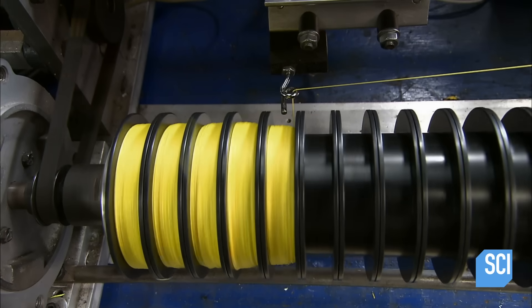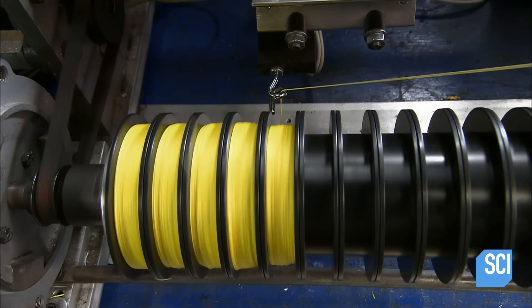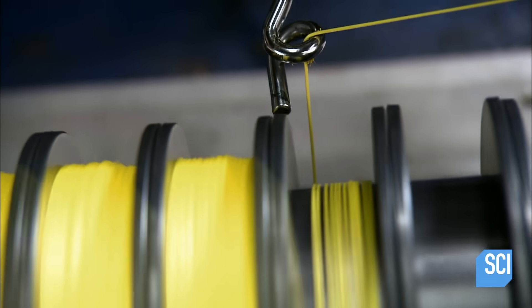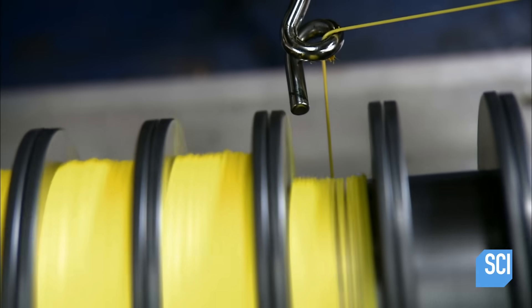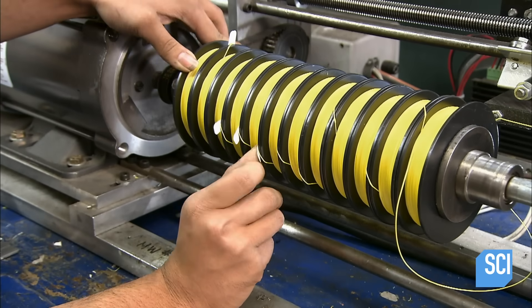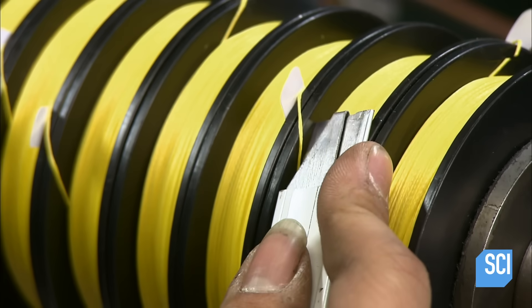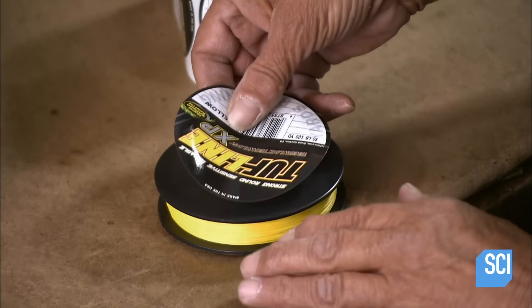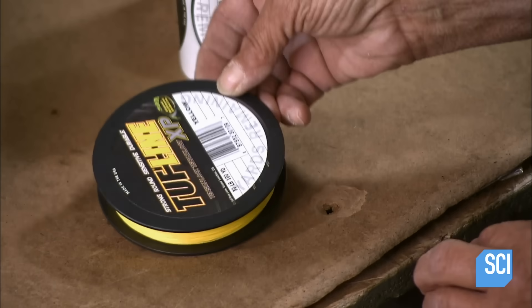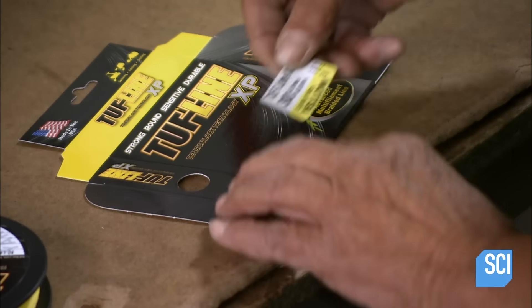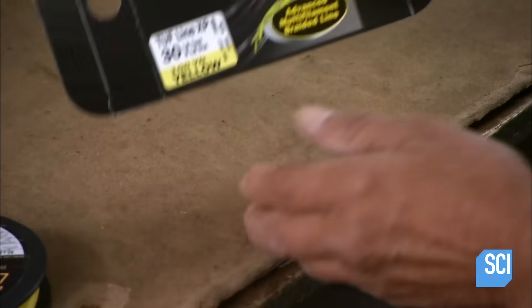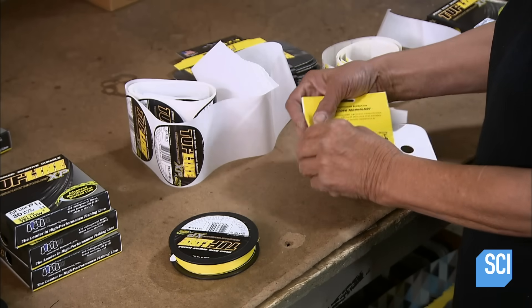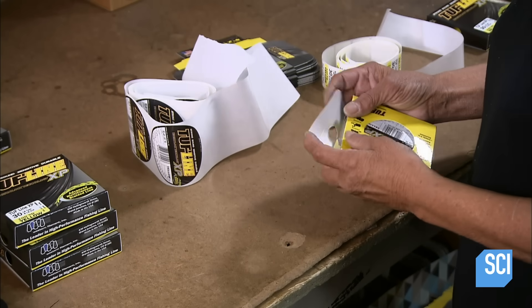With the test piece of fishing line approved, an automated system now transfers the line to retail-sized spools. It loads about 450 feet of line onto each one. A worker applies a label with product details and packages it in a cardboard box. It takes about 17 days to braid, color, and process a single spool of synthetic fishing line.